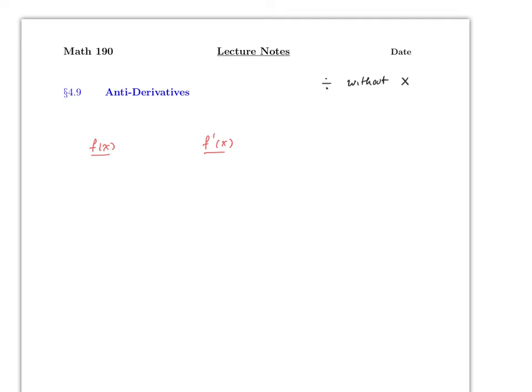For example, let's say you have a function and then its derivative. If f(x) = x², the derivative is 2x. So therefore, the anti-derivative of 2x is x². You can think of the original function as the anti-derivative. We have a better name for this which we'll use soon, but for now this is what it is.